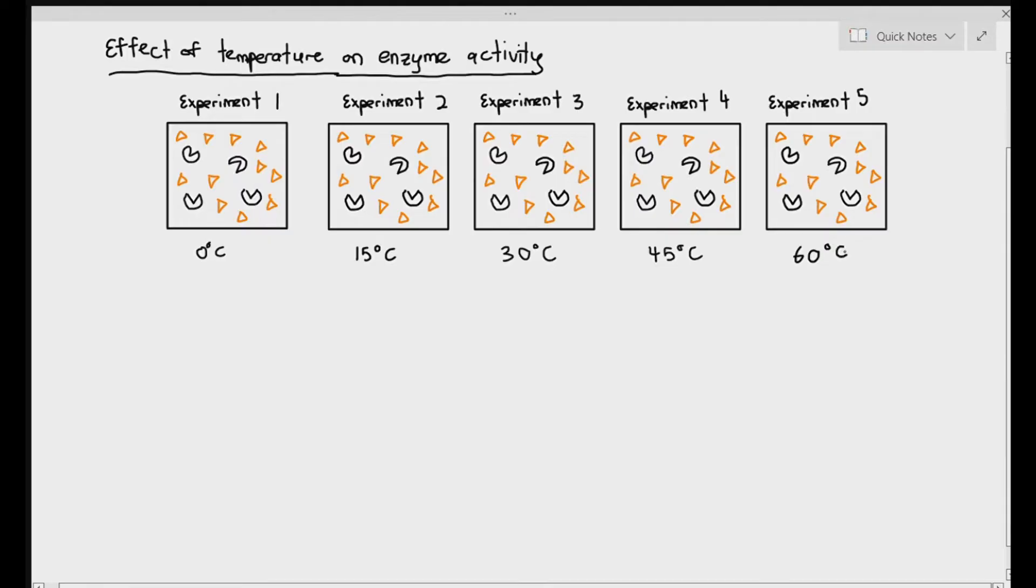0, 15, 30, 45 and 60. So when you conduct the experiments, what we want to always see is the initial rate of reaction. Why the initial rate of reaction for each of them? Because it's the fairest comparison of them all.